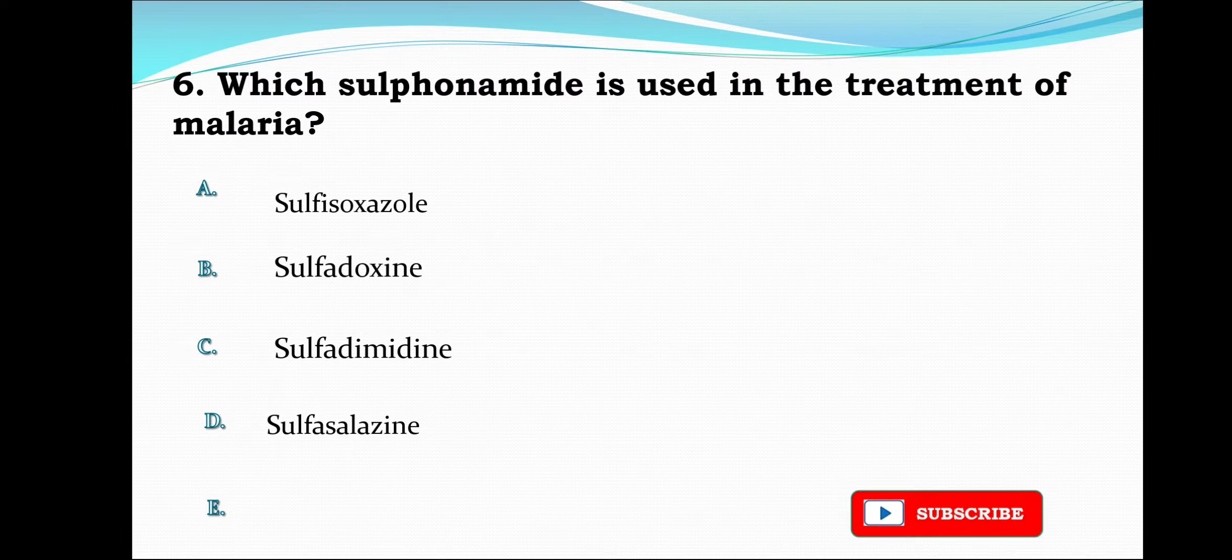Next question: Which sulfonamide is used in the treatment of malaria? The options are sulfisoxazole, sulfadoxine, sulfadimidine, or sulfasalazine. The correct answer is sulfadoxine, that is option B.